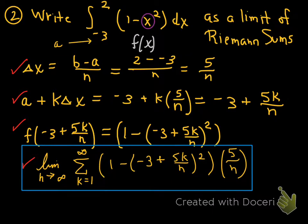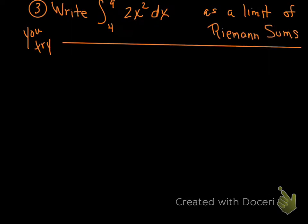One more. This one's for you. You try. So, if you ain't got a piece of paper, if you haven't, you've just been listening. See if you can do this problem. Write the integral from 4 to 9 of 2x squared dx as a limit of Riemann sums. Pause the film at this time. And you give that a whirl. I want you to try this on a solo mission. Do it on your own.